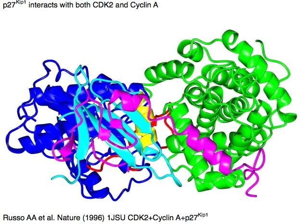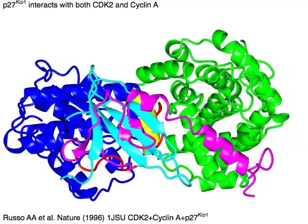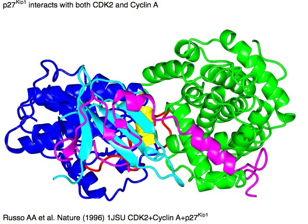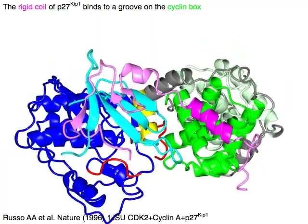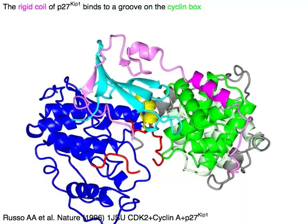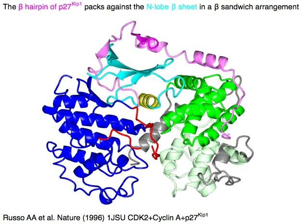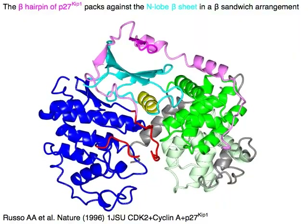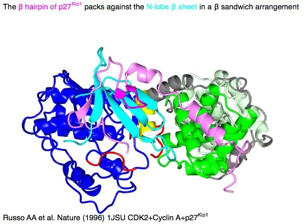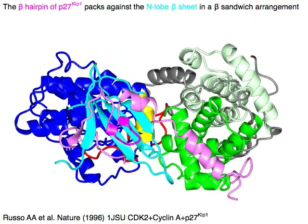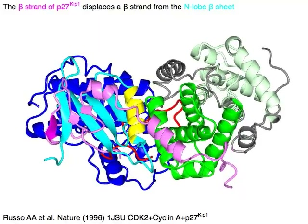P27-KIP1 interacts with both CDK2 in blue and cyclin-A in green. The rigid coil of P27-KIP1 in magenta binds to a groove on the cyclin box in green. The beta hairpin of P27-KIP1 packs against the N-lobe beta sheet in a beta sandwich arrangement. The beta strand of P27-KIP1 in magenta displaces a beta strand from the N-lobe beta sheet in cyan.